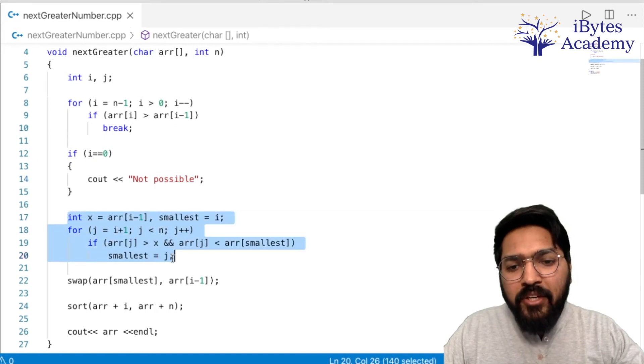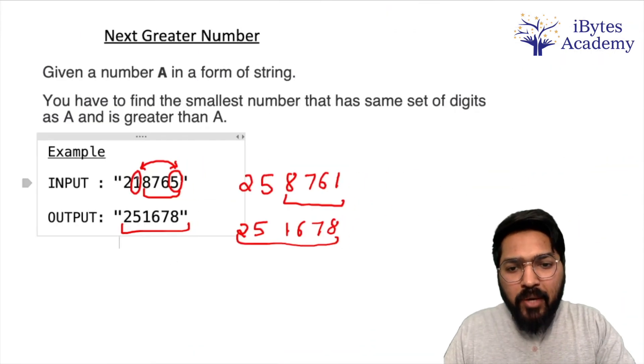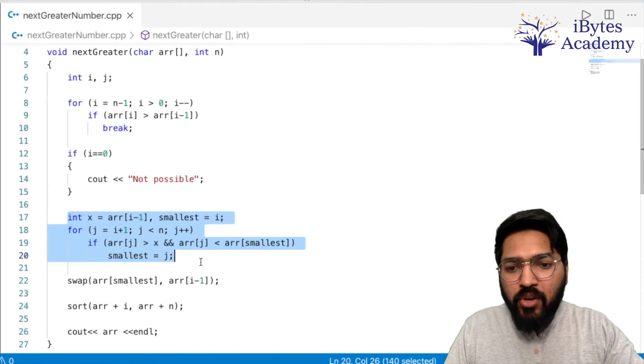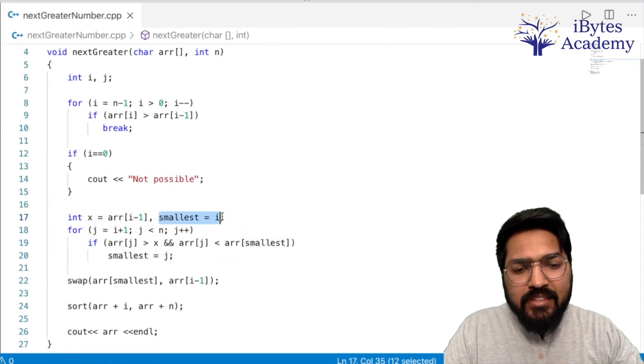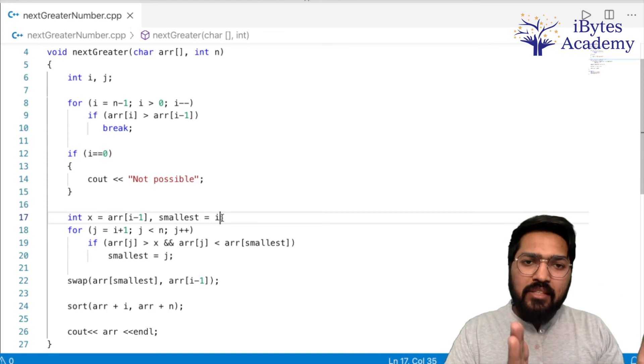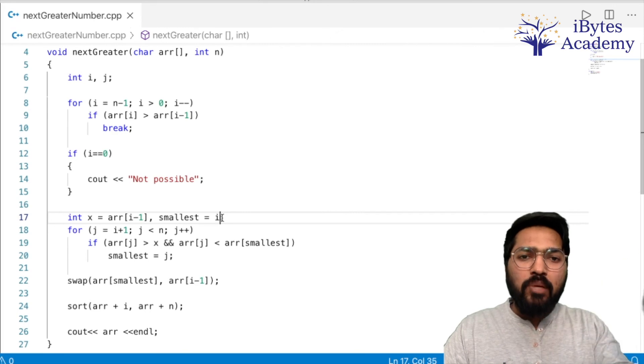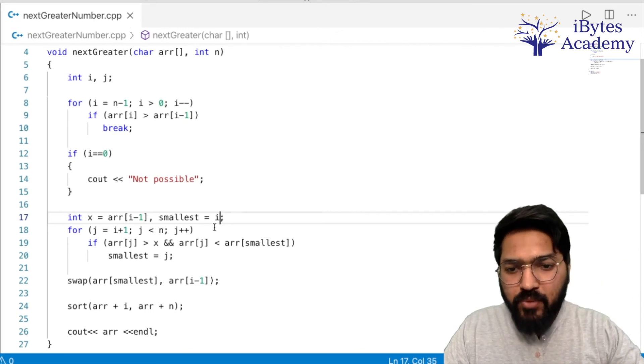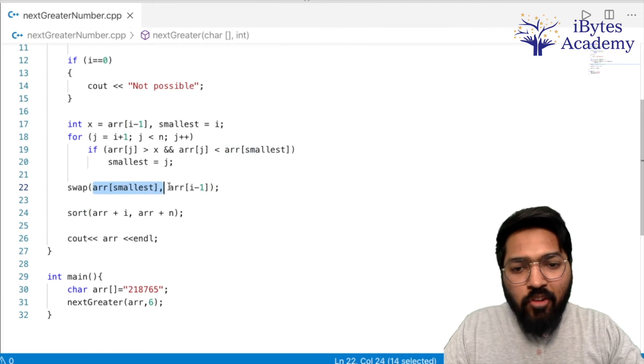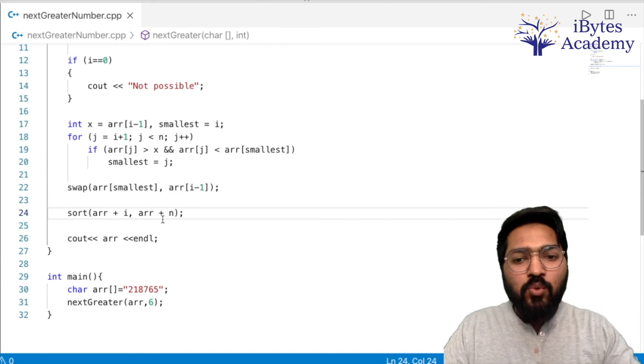After that, we will write another loop. This loop is to find the smallest number to the right of i minus one. Initially, we have set smallest equal to i, because we need to find the smallest digit from i to the last position. As we find smaller elements, we will keep updating it. And finally, we will swap array of smallest and array of i minus one.